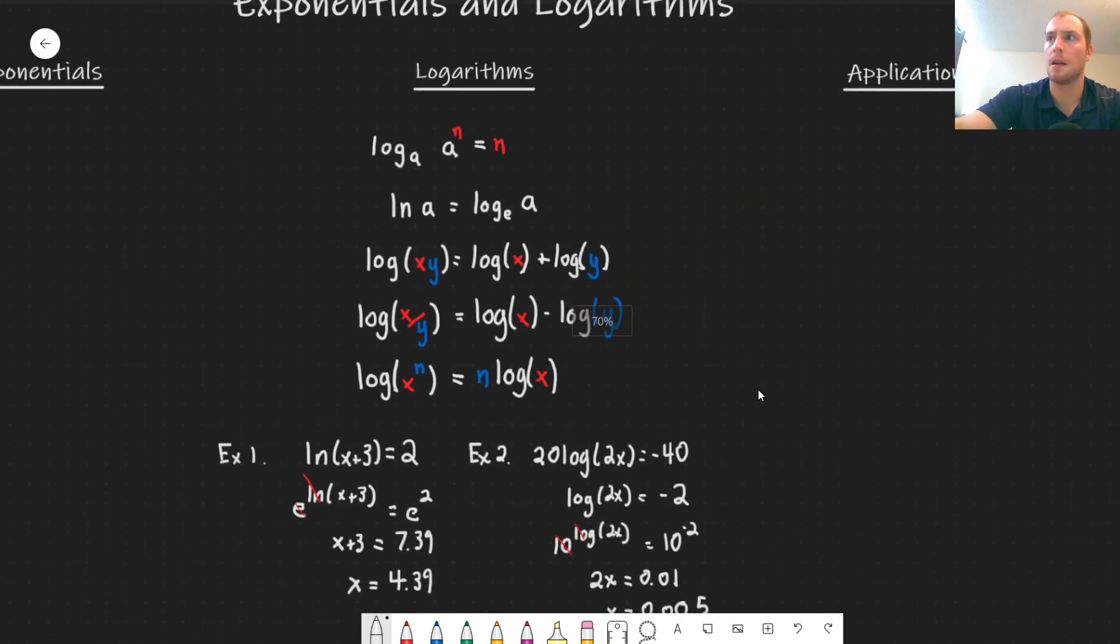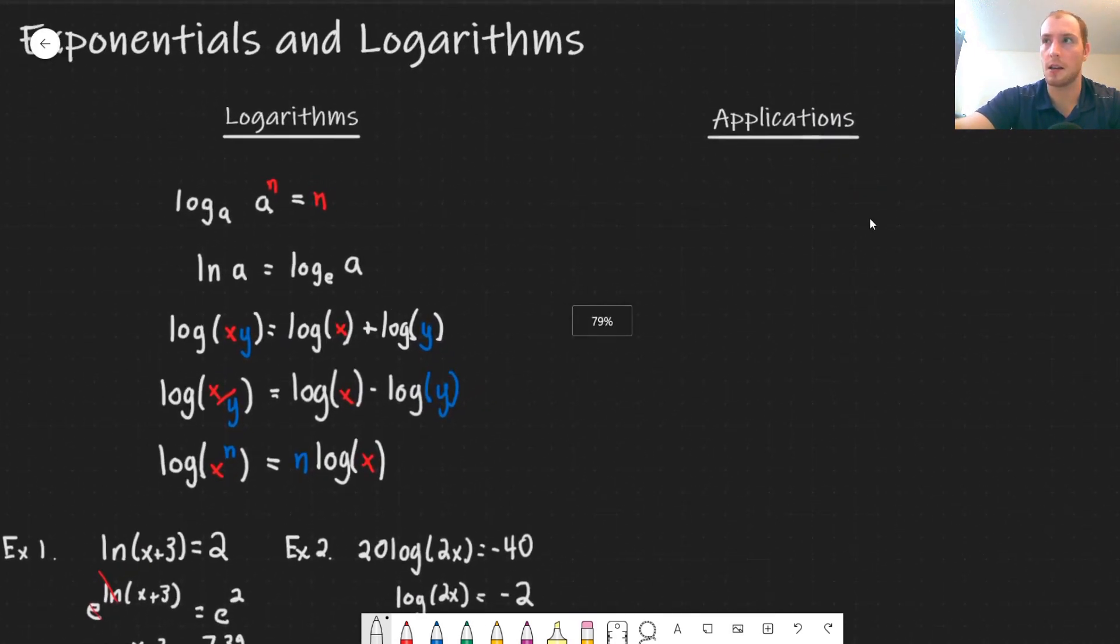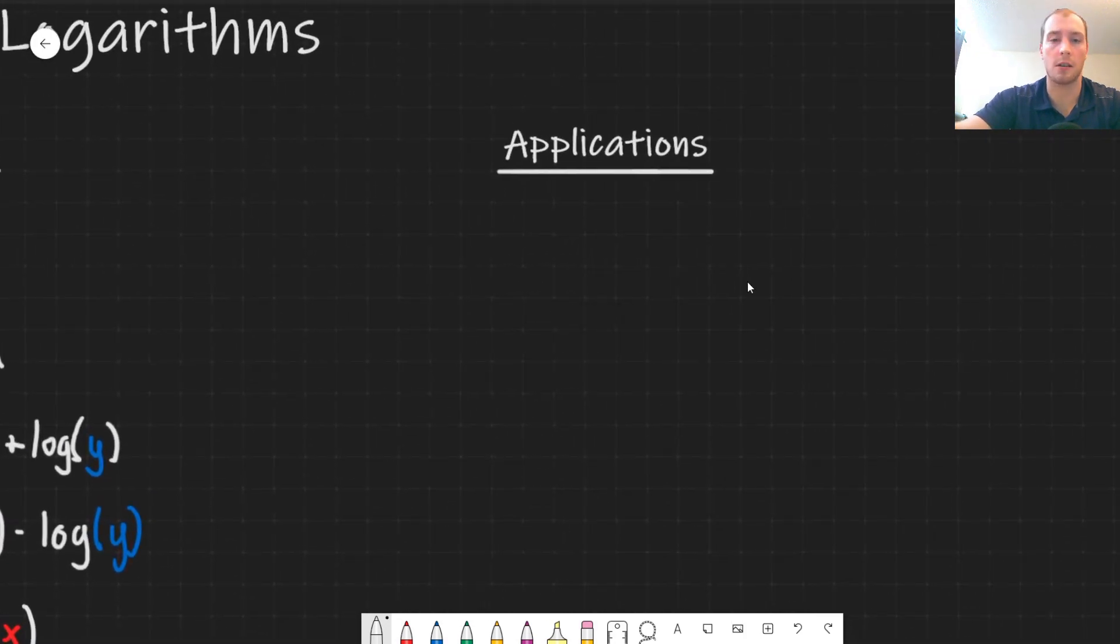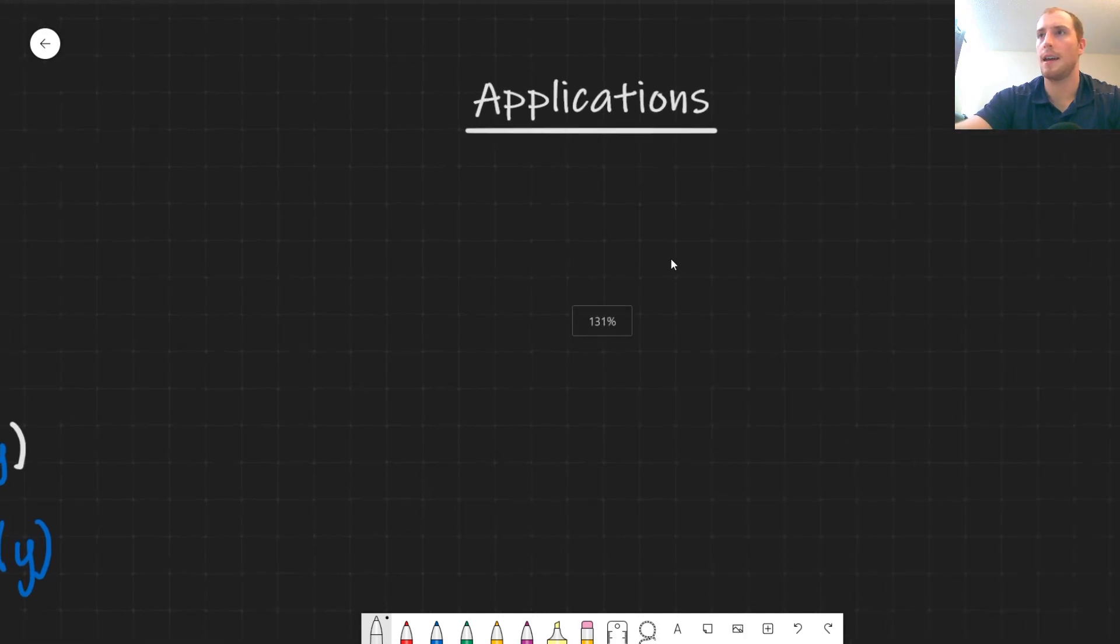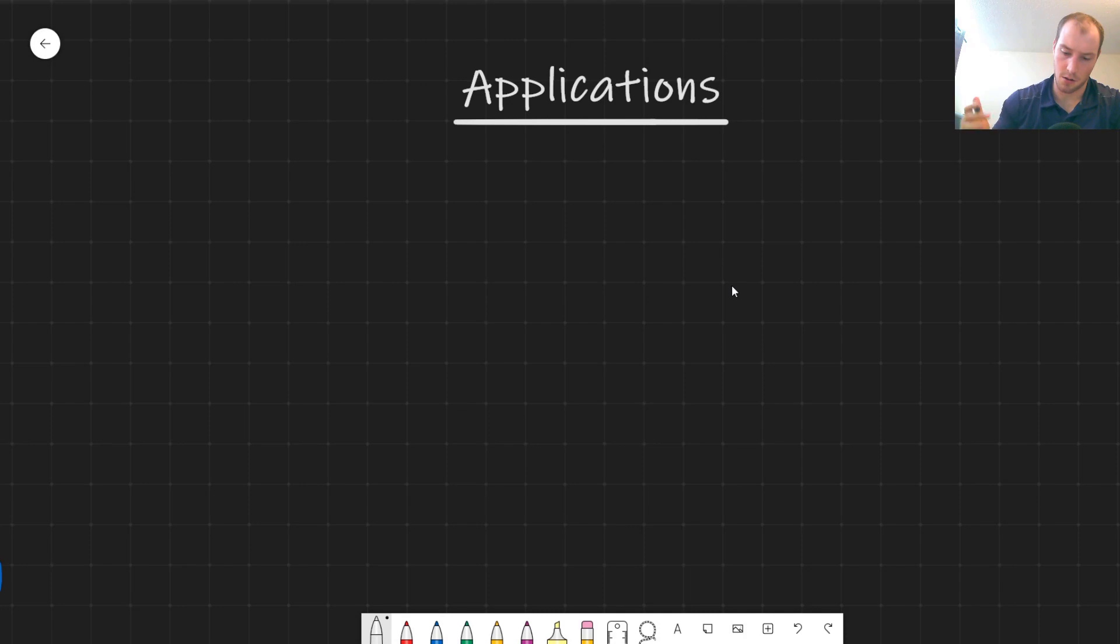And now getting into some applications. So the main application that we have for this is converting to decibels. It's a unit. It's a logarithmic unit similar to volts or meters or anything like that. Decibels is kind of a ratio of a unit in a logarithmic scale. And it's used in the circuits course, ECORE 1043. It's used for voltages. So in your circuits course, your voltage in decibels, so it's just a unit, is equivalent to 20 logarithm of your voltage in regular volts. So in blue we have the volts and in red we have the voltage in decibels.